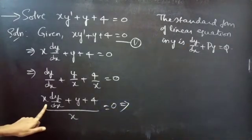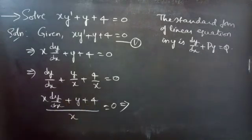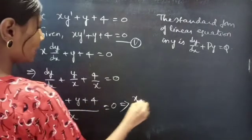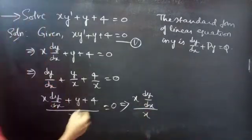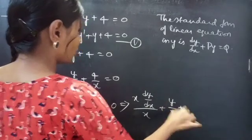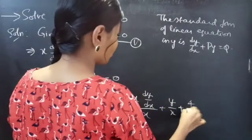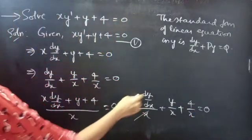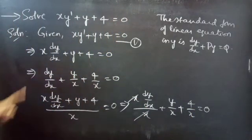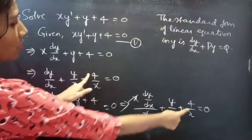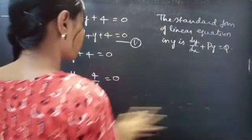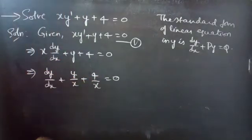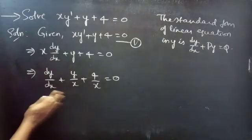We can split this into 3 terms: x·(dy/dx)/x + y/x + 4/x = 0. Here, x gets cancelled from the first term, giving dy/dx + y/x + 4/x = 0. We always write directly like this — you can verify either way, there's nothing wrong in it.